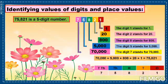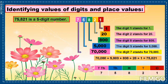This slide now shows identifying values of digits and place values. On this slide, we will learn how to tell the values and place values of the digits of a given number. The sample number we will use is 75,821, which is a five-digit number.